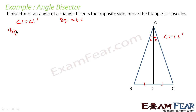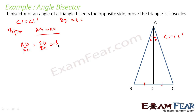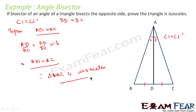We have to prove AB equals AC. Since angle 1 equals angle 1-dash, by the angle bisector theorem AB/AC = BD/DC. Since BD equals DC, this ratio becomes 1, so AB equals AC. Therefore triangle ABC is isosceles. This is a very simple application of the angle bisector formula: angle 1 equals angle 1-dash, so AB/AC = BD/DC, and since BD equals DC, AB equals AC.